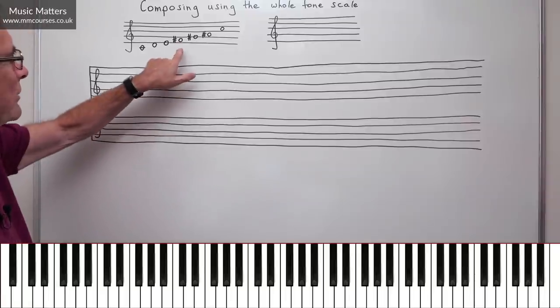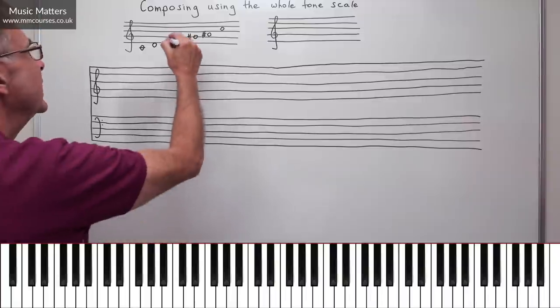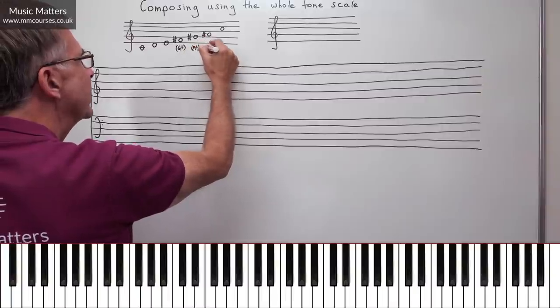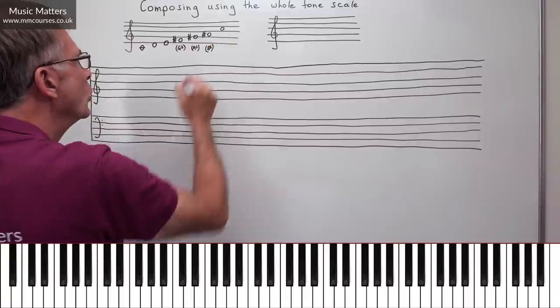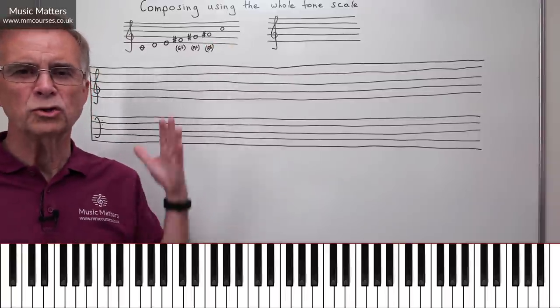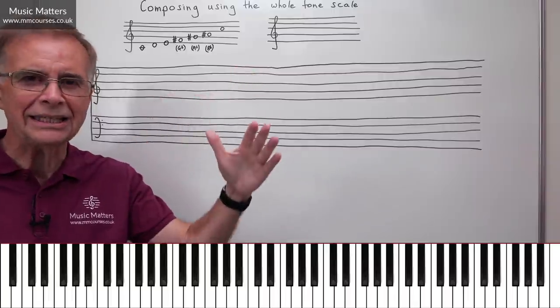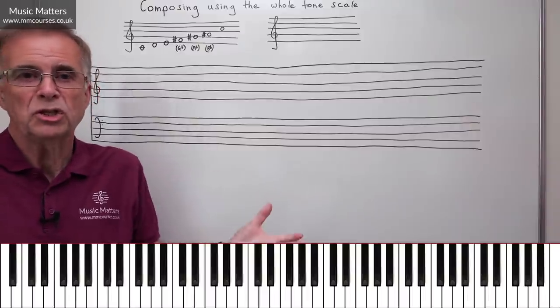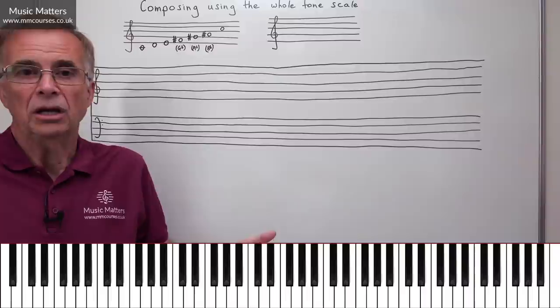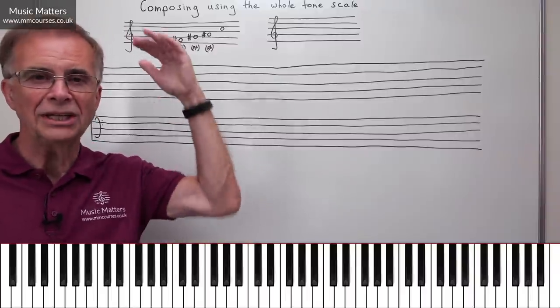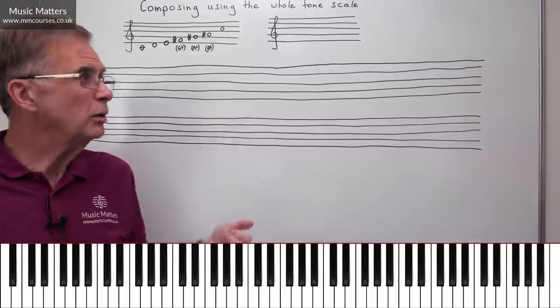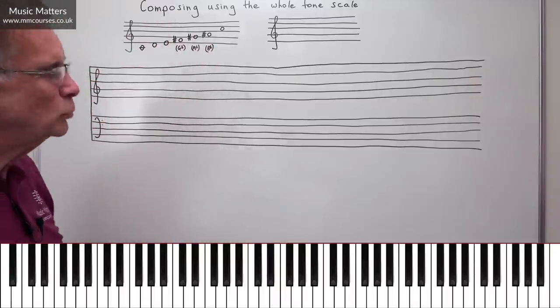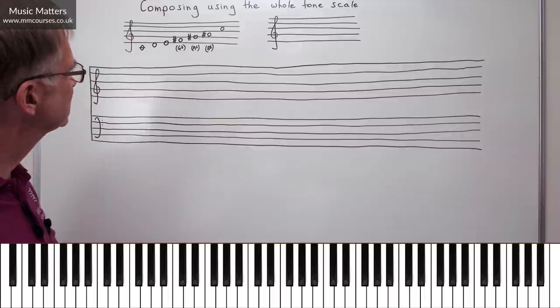Now, does it have to be F-sharp, G-sharp, A-sharp? Absolutely not. It could be that you treat these notes enharmonically and call them G-flat, A-flat, B-flat. All perfectly possible. Because we're not registering this in relation to any conventional key, we're not really bound by any particular way of labelling the note. I mean, if you're in G-major, then you use F-sharp because that is the raised seventh degree of a scale of G-major. You don't call it G-flat, you call it F-sharp. Well, actually, in the whole tone scale, we haven't got the same points of reference. So you can decide what works best in any given moment.